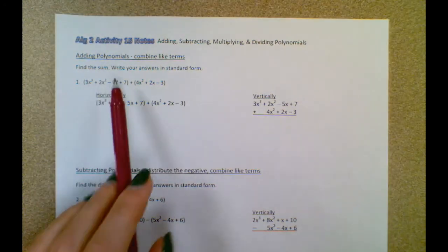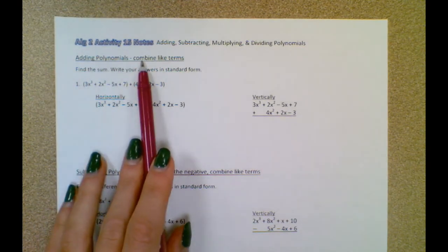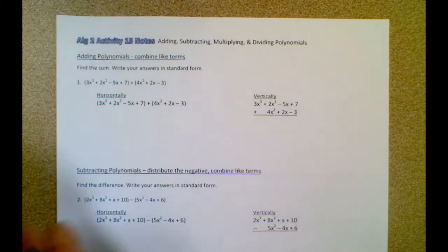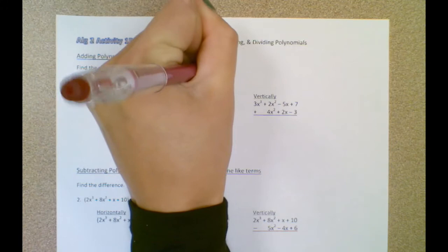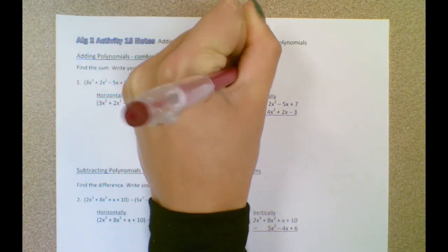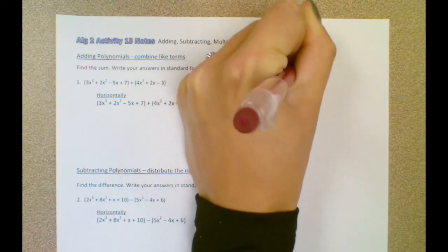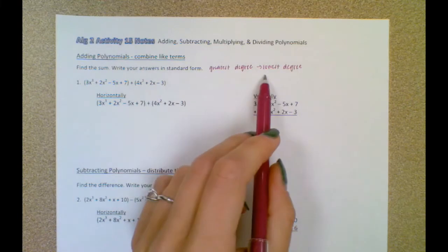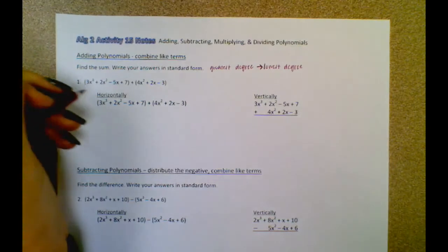The first thing we're going to talk about is adding polynomials. When you are adding polynomials, really all you're doing is just combining your like terms. The directions say find the sum and write your answers in standard form — meaning you're going from the greatest degree to the lowest degree. For example, you would write x squared and then x. The degree refers to that exponent.